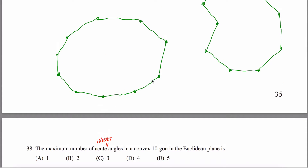An interior angle is talking about this measure right here. The exterior angle is talking about this measure right here. Usually you only hear the term exterior angle when talking about a convex polygon, because the interior and exterior angles are supplements of each other — red is 180 minus blue, blue is 180 minus red.